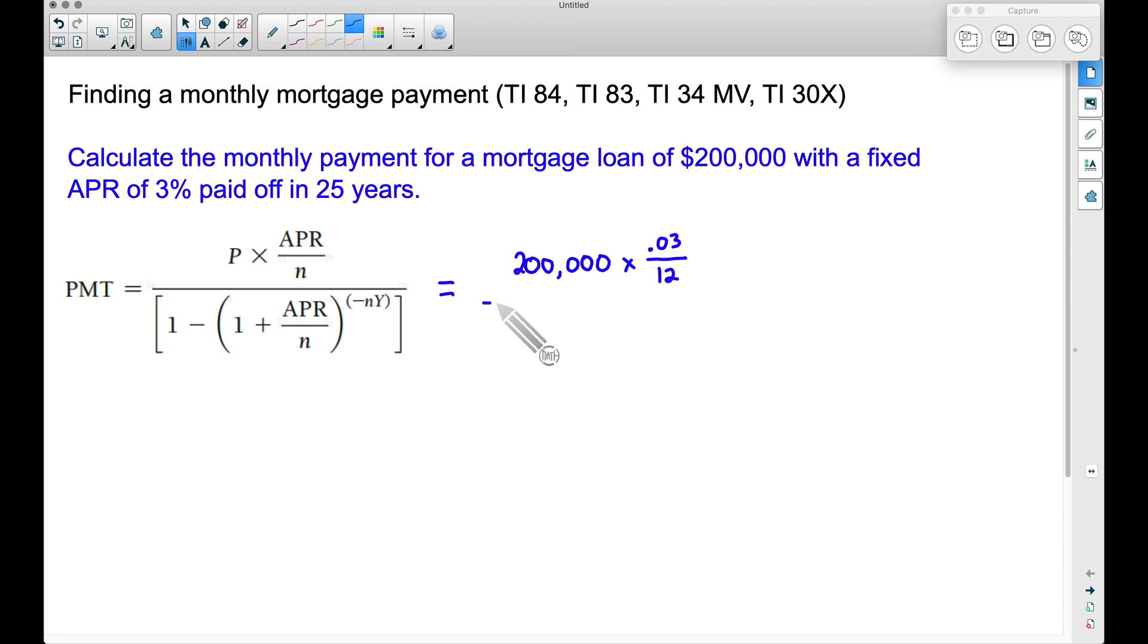Now we're going to divide by the rest of this stuff, and we have these square brackets. Depending on what calculator you have, you may or may not need to use these. But instead of square brackets, I'm just going to treat them as parentheses. We have 1 minus another set of parentheses, 1 plus the APR over N, so 1 plus 0.03 over 12.